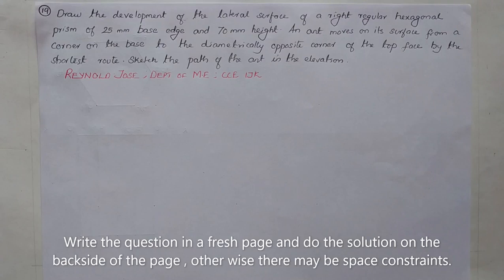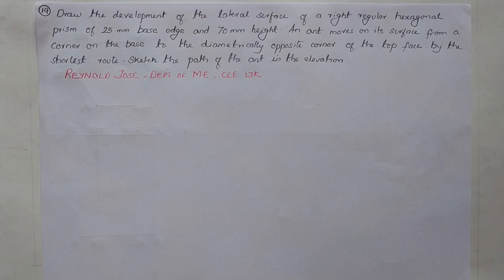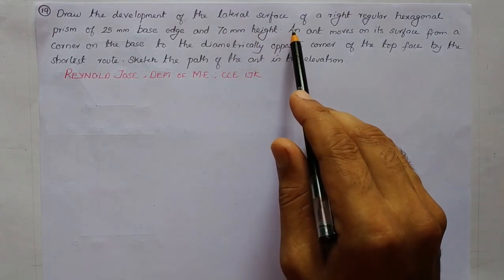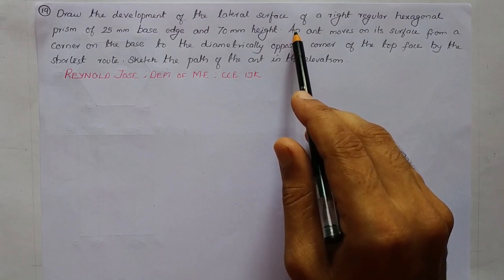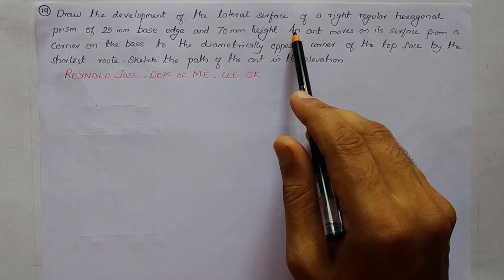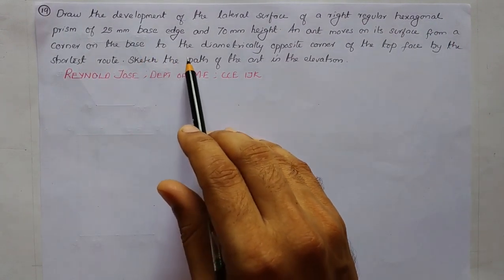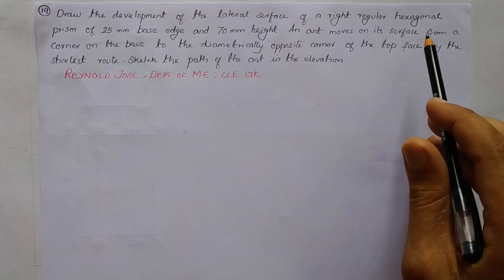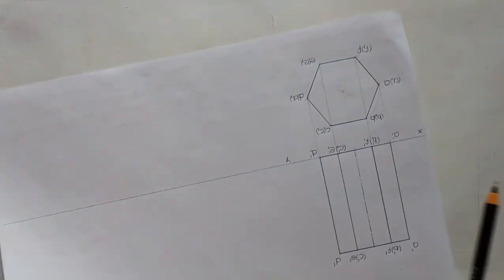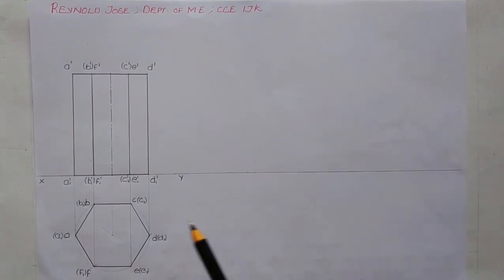This problem involves the development of a solid and finding the shortest path travelled by an ant. The very first step is to draw the simple front view and top view of the hexagonal prism, and after that we draw the development of the lateral surface. Then we think about the shortest path by which the ant travels from a corner of the base to the diametrically opposite corner of the top base.